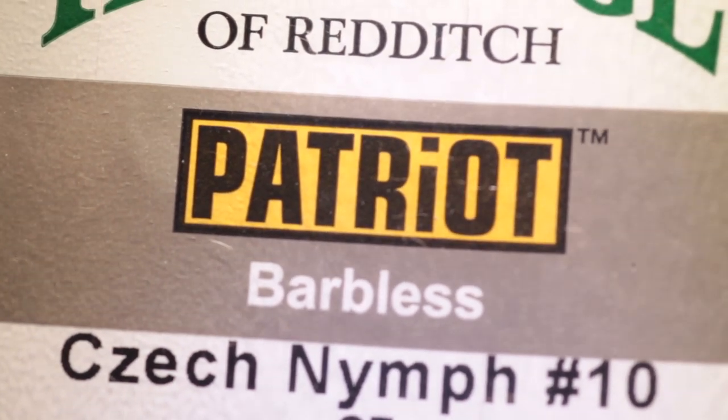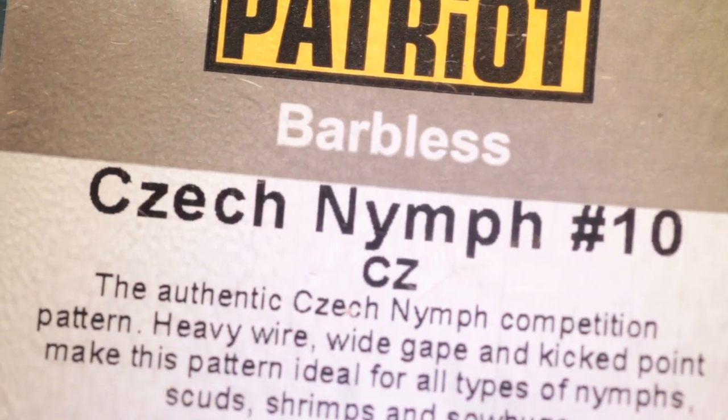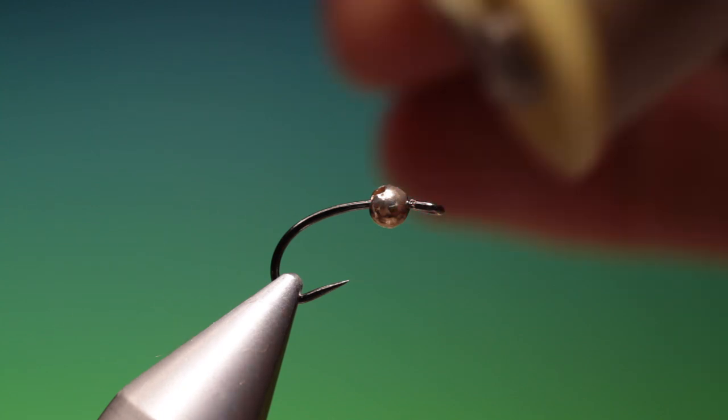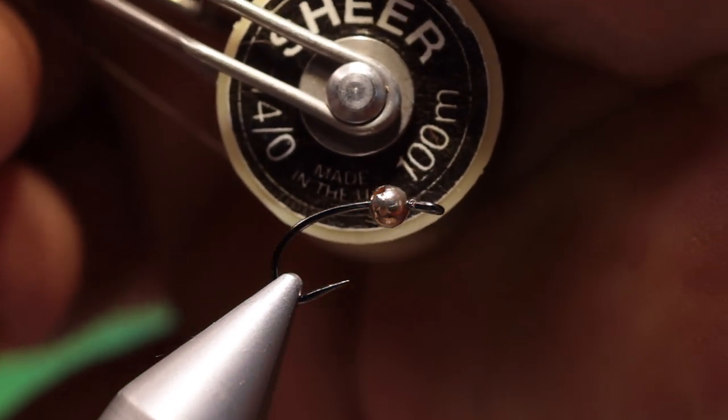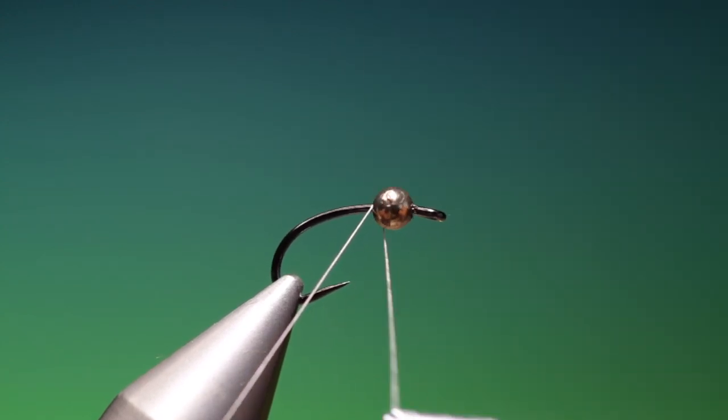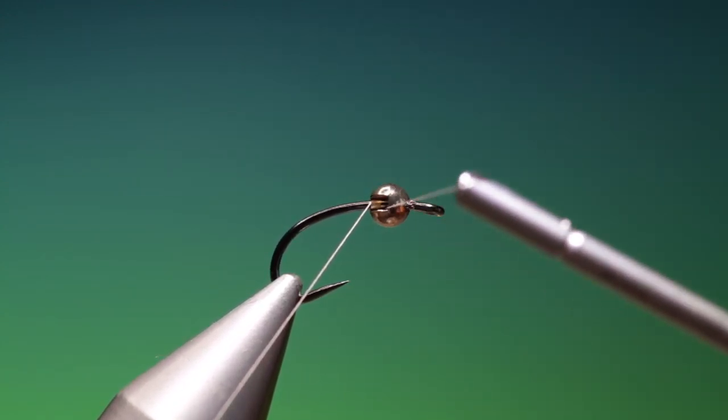Okay, we'll start with the Partridge Patriot Barbless Czech Nymph size 10 and this is a 3.5mm tungsten slotted bead. We've got Shear 40 nought and we'll just get our Italian thread on.